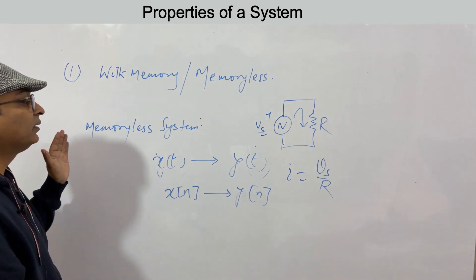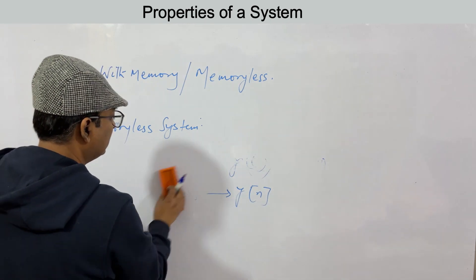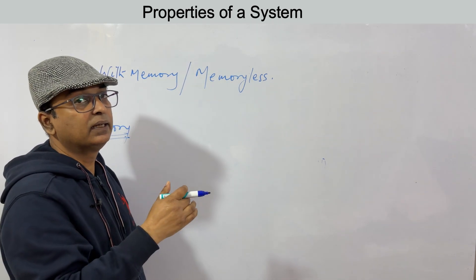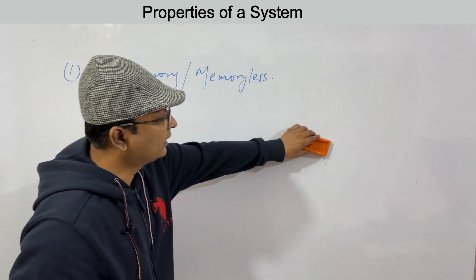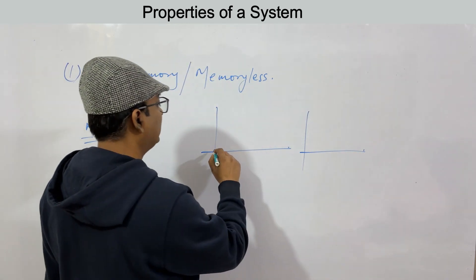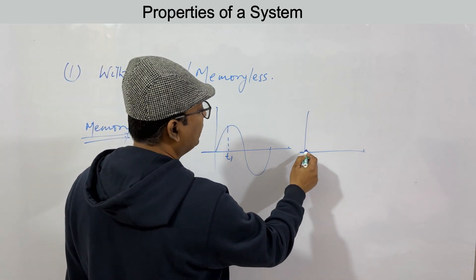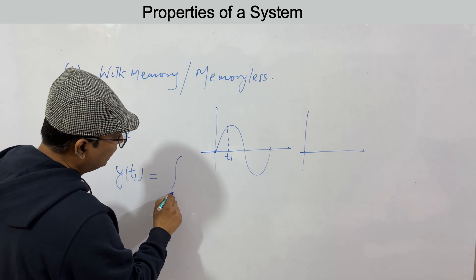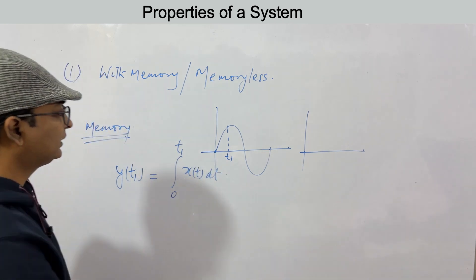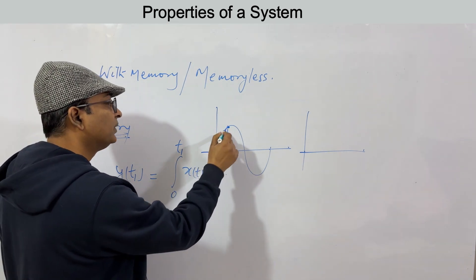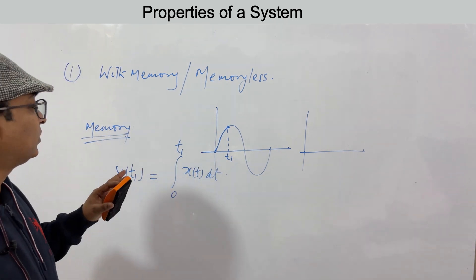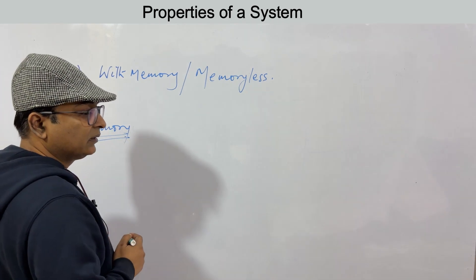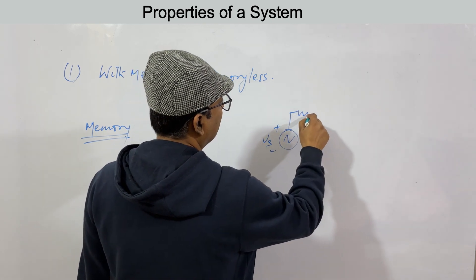A system with memory is one where the output depends on the current input and also on other — typically previous — values of the input signal. For example, if y at t1 depends on the integral of x(t) from 0 to t1, not just the value at t1, then that system has memory.